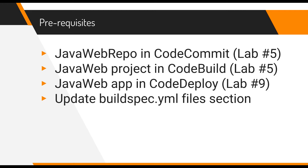The last prerequisite is that we need to update our buildspec.yaml file to output all of the files needed for CodeDeploy to work properly. In lab number nine we depended on uploading our own archive to S3 through S3 commands within our buildspec. However, the way CodePipeline works is that it generates its own outputs based on the files section in your buildspec.